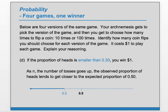Part D: if the proportion of heads is smaller than .3, you win $1. Do we want to be far from the expected value or close to the expected value? We want to be far from the expected value. So do we want a small n or a large n? We want a small n, because with a large n we expect to be close to the expected proportion. So we want a small n to be far over here — we'll choose 10 times.